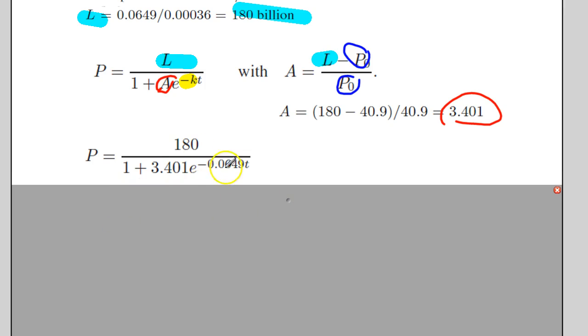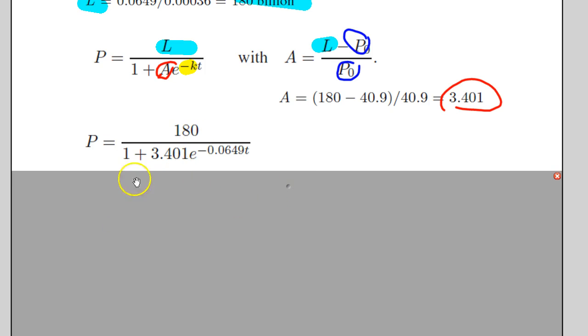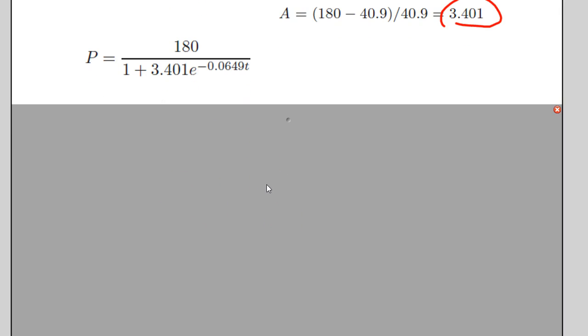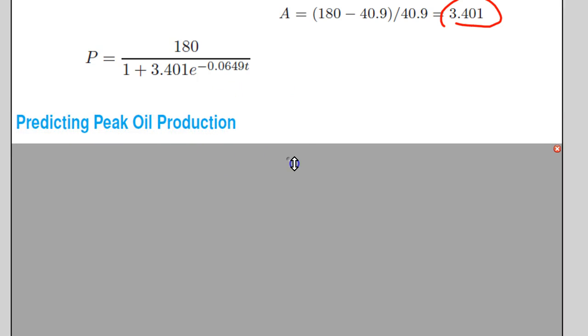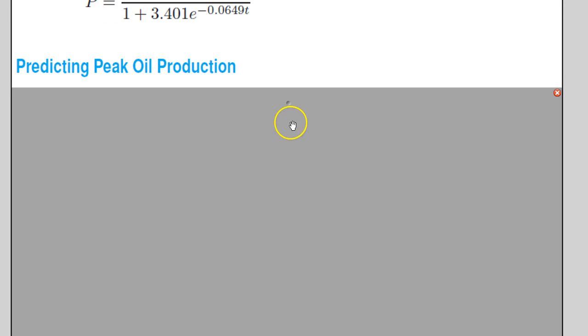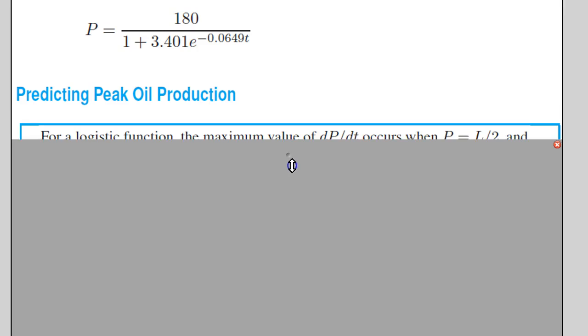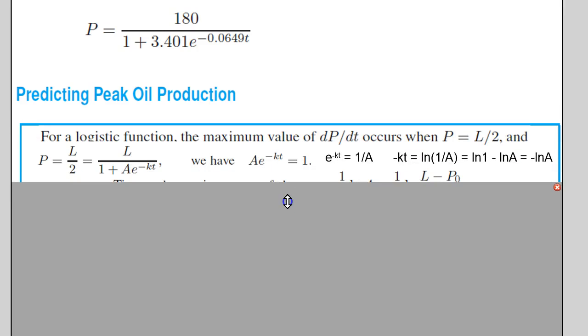So now we have a lovely expression to represent oil production from 1950 on. Now that we have our logistic solution, our solution to our logistic differential equation, then we can use it to predict the peak oil production. In this case, when will this P value be the highest and at what time t will that be? If you remember, our highest value will be when P is equal to L over 2, half of the limiting value.